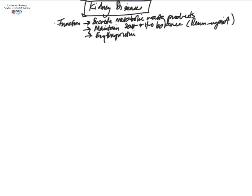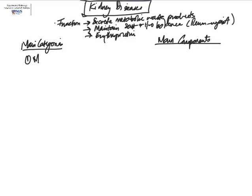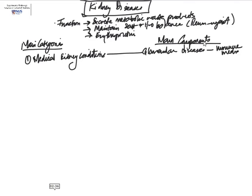Now let's move on to looking at actual diseases in the kidney. I'm going to follow the three main categories mentioned earlier. The first is medical conditions — so medical kidney conditions. By medical, I'm referring to non-surgical conditions, which are usually medically treated.